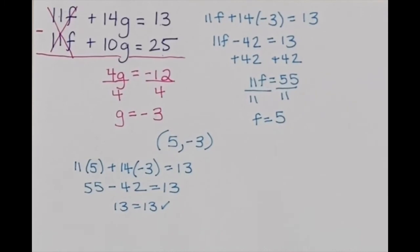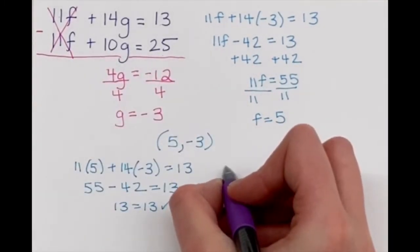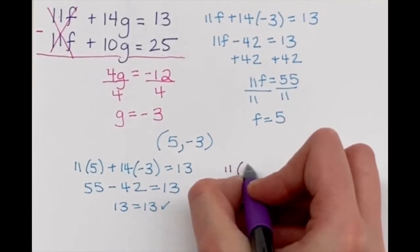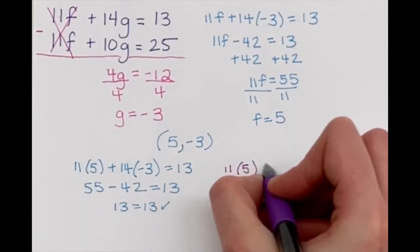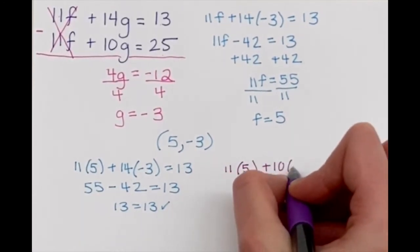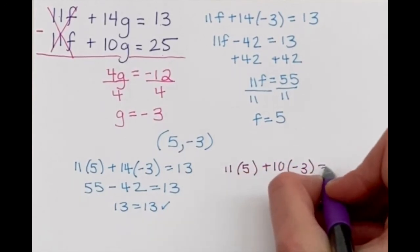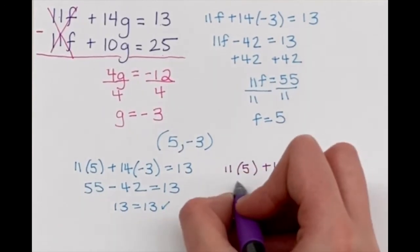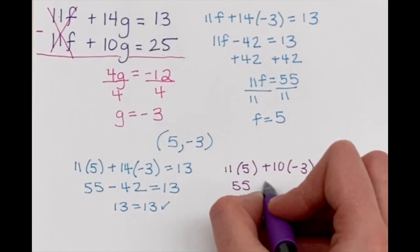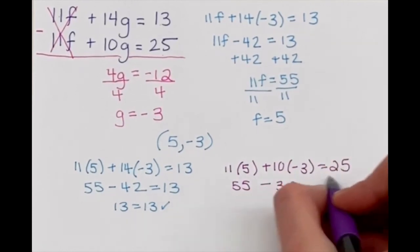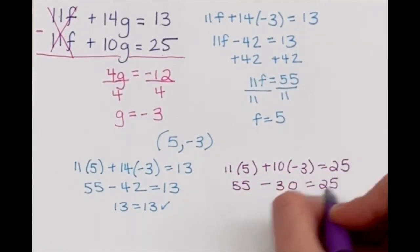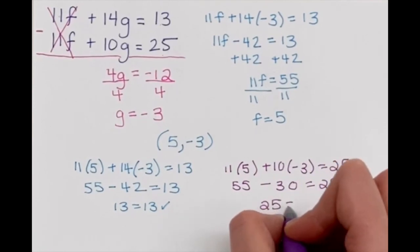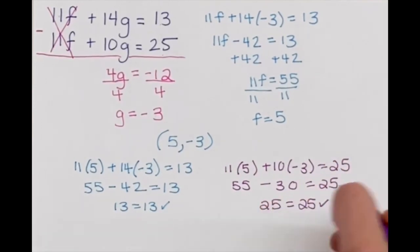Remember with a system, you need to check both equations. So now I'm going to check in the bottom. So 11 times 5 plus 10 times negative 3 should equal 25. 55 here minus 30. And yes, it does, in fact, equal 25. So we are good.